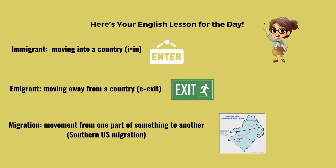First, we're going to start by getting a few terms defined. An immigrant with an 'I' is someone moving into a country. America is a country of immigrants — immigrant starts with an I, and we're moving in. But emigrant with an 'E' means someone who is exiting or moving away from a country — exit with an E, an easy way to remember it. And when we talk about migration in the United States, we're talking about movement from one part of the United States to another.